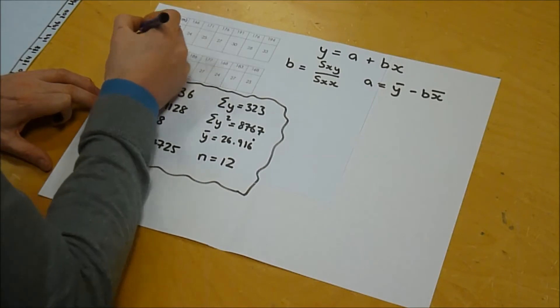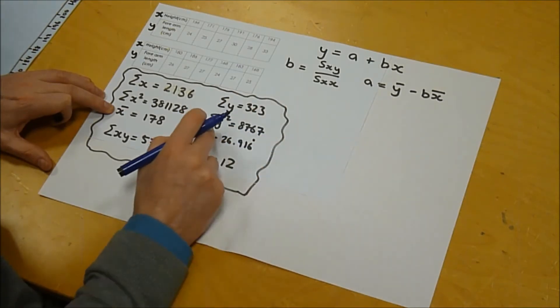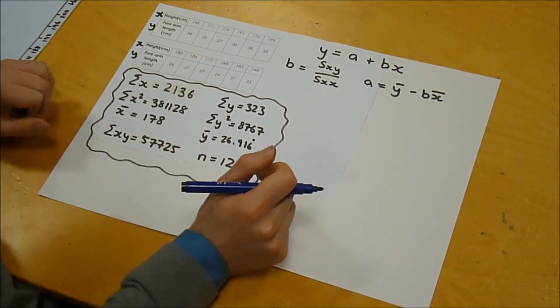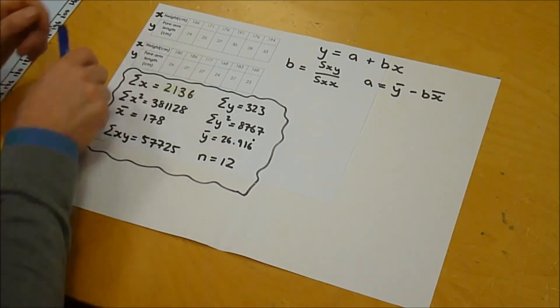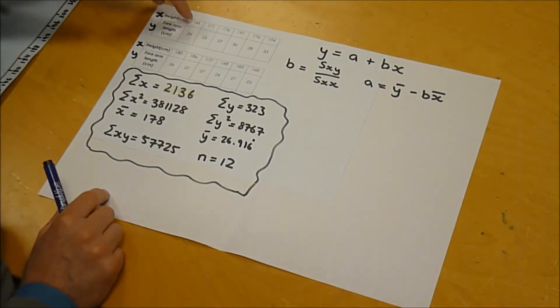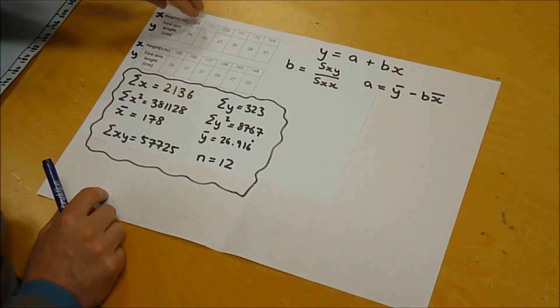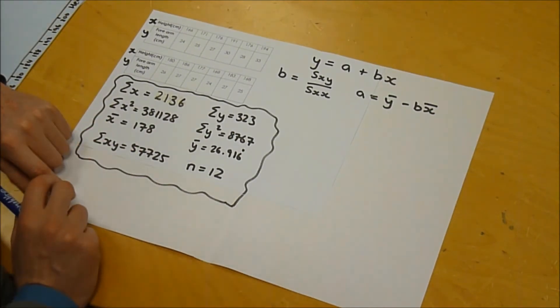Similarly for y, which is the forearm length, we get these figures. The sum of y is 323, the sum of y squared is 8,767, and the mean of y is 26.916 recurring. Now, the only other thing we need is the sum of xy. That means you take each pair of data, for example, this teacher who's 166 centimeters tall with a forearm length of 24, and you multiply those two figures together. You do that for each of them and then you add them all up. So what you should do is verify you get the same figure. That's the only really new calculation we haven't seen before. So have a go at that one, double check you get that figure.